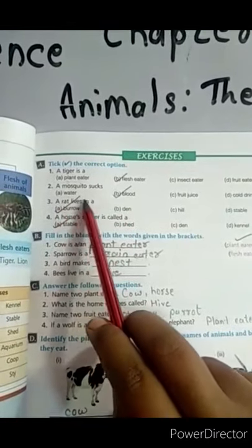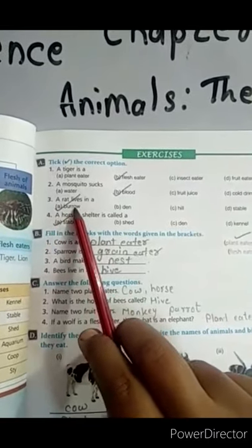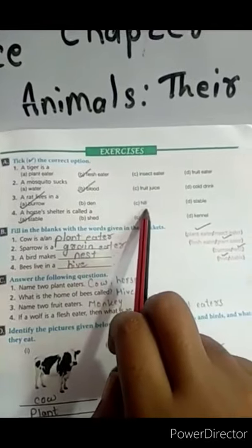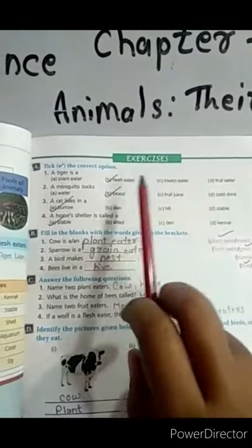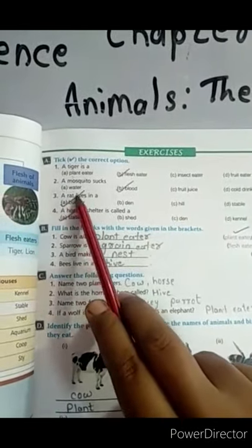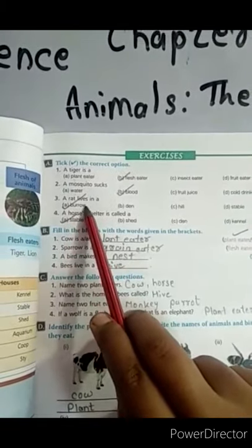A rat lives in a burrow, den, hill, or stable. And the right answer is a rat lives in a burrow.